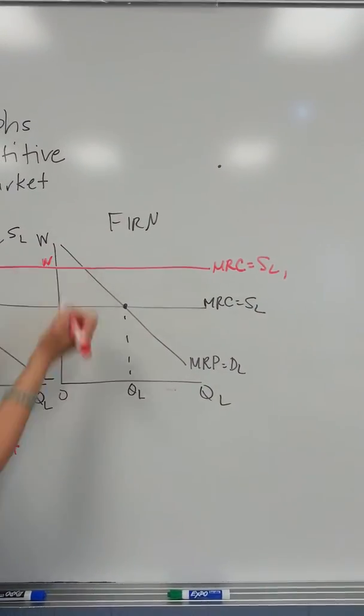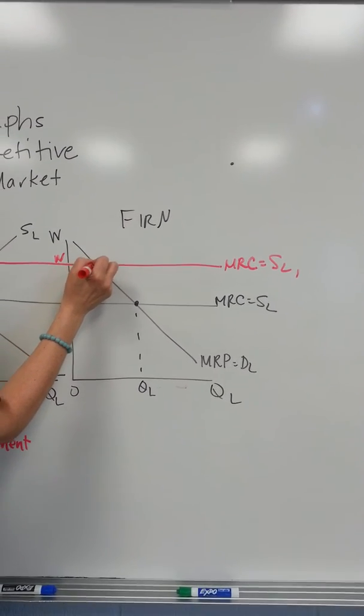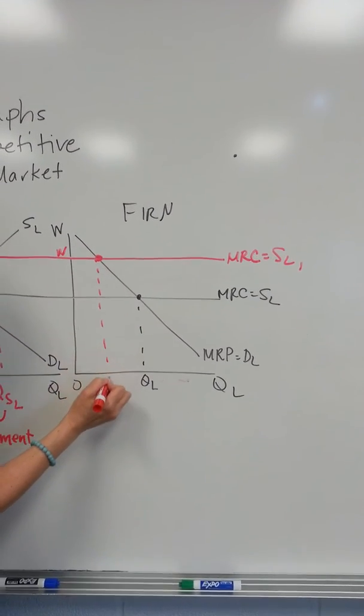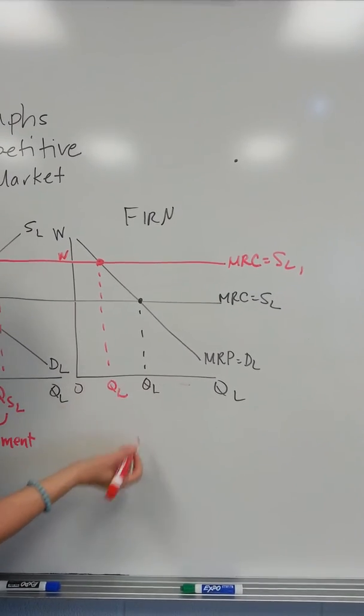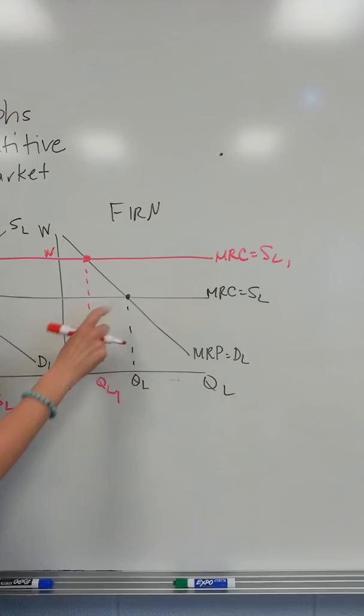and therefore a new profit maximizing point. Where MRC equals MRP, the number of workers that will be hired by this firm is less than what it would be at the equilibrium wage.